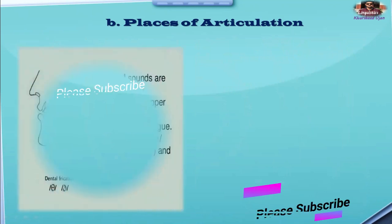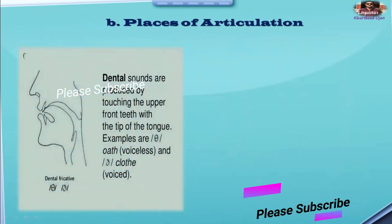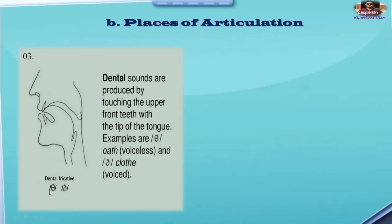Number three: dental sounds. Dental sounds are produced by touching the upper front teeth with the tip of the tongue. Such sounds are known as dental sounds. For example, /th/ in 'oath' — this is a voiceless sound — and /ð/ in 'cloth' — this is a voiced sound. So /th/ and /ð/ are actually the dental sounds.